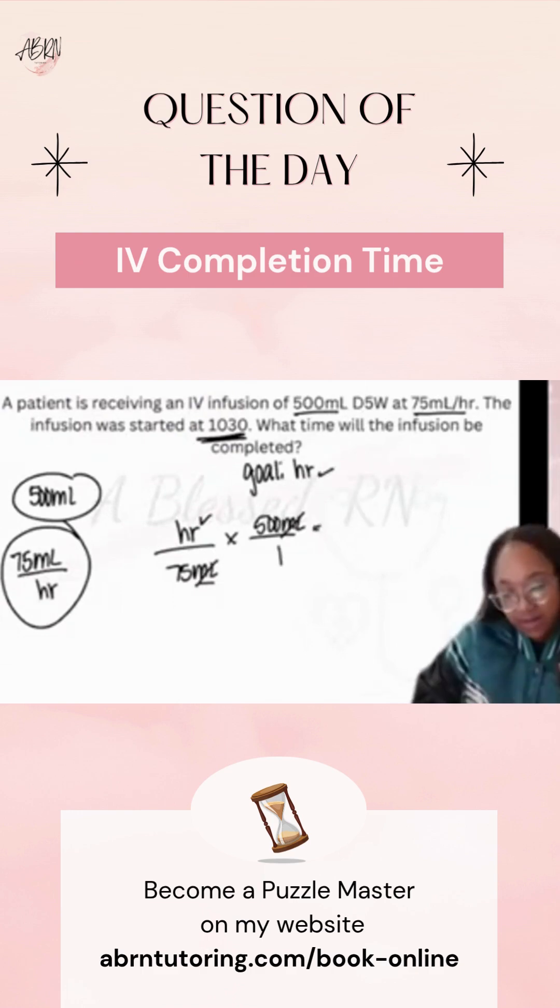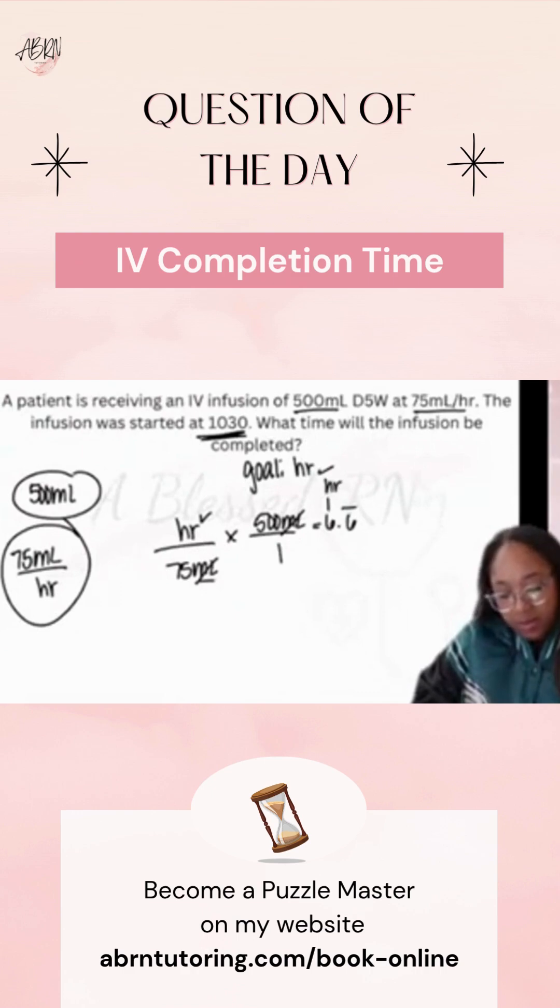500 divided by 75 is 6.66 repeating. The whole number is going to be the hour part. The part that's behind the decimal are going to be your minutes. So I need to multiply everything that's behind the decimal by 60 because there's 60 minutes in an hour to get my minutes.